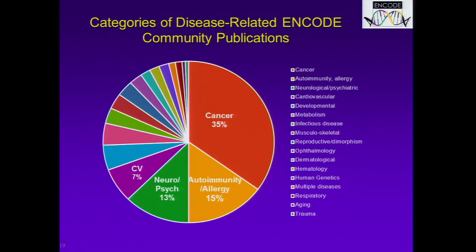We categorize the community publications by what researchers are using them for. We have about 160 publications that are disease-specific. Not surprisingly, about a third of the publications are in cancer research, 15 percent are looking at autoimmunity and allergy, 13 percent in neurology and psychiatric diseases, and about 7 percent in cardiovascular disease. But there's also a wide range of other disorders that have been published using ENCODE data in smaller percentages.